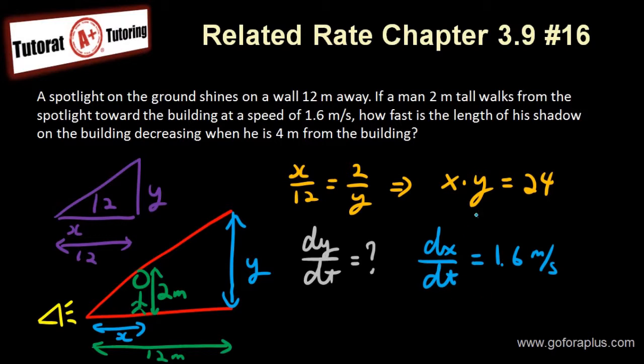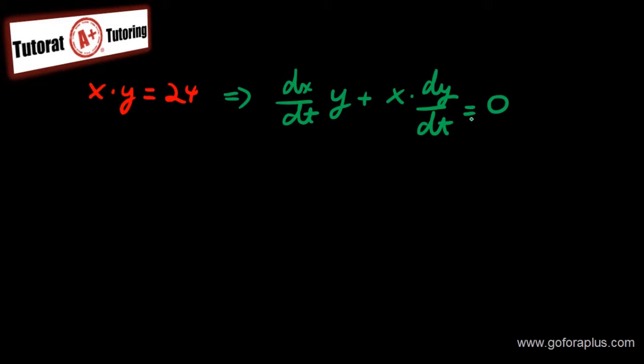Now the next step is to derive this equation and plug in all the numbers. So if I derive the equation, I have x times y equals to 24. So I need to do product rule. dx over dt, so both x and y are depending on t because it's depending on the time. So dx over dt times y plus x times dy over dt must be equal to 0 because the derivative of 24 is 0.